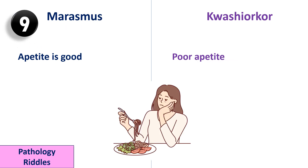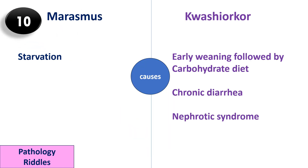In marasmus, the appetite is good, whereas in kwashiorkor there is poor appetite in the patient. Marasmus is caused by starvation, whereas kwashiorkor can be caused by early weaning followed by a carbohydrate-rich diet, or if the patient has chronic diarrhea.